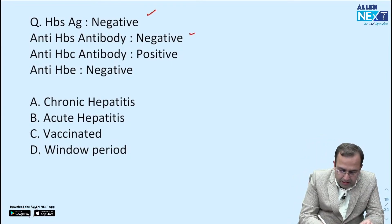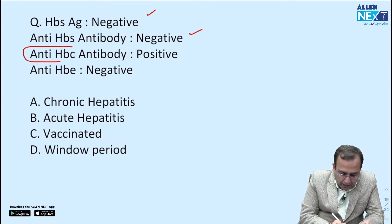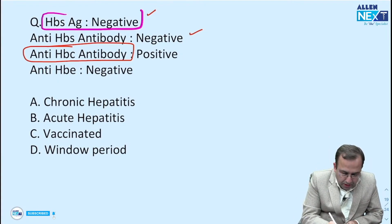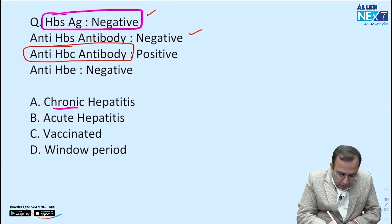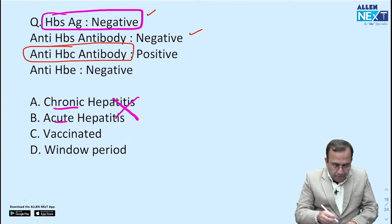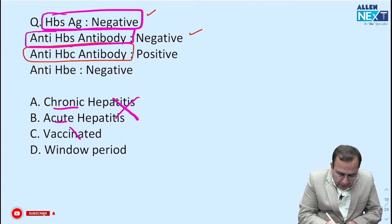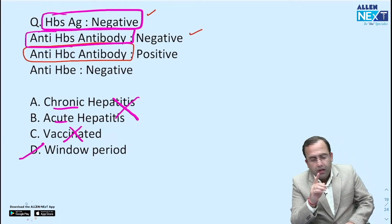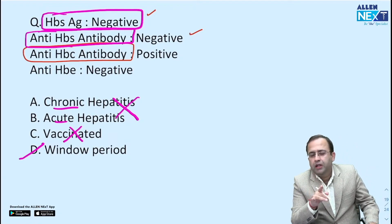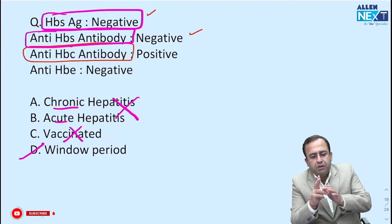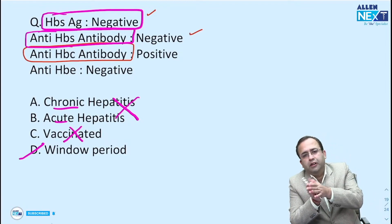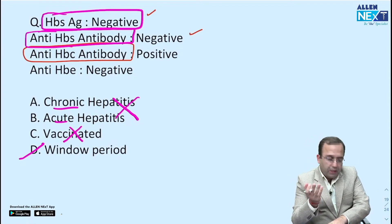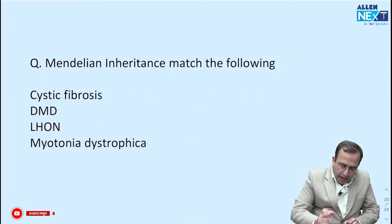Next question — HBsAg negative, anti-HBs antibody negative, only anti-HBc antibody positive. The minute HBsAg is negative, chronic or acute hepatitis as options are fully out. The minute anti-HBs antibody is negative, vaccinated individual is out. So what is left is the last option. If window period was given in the options, that is the best answer — presence of IgM anti-HBc antibody.